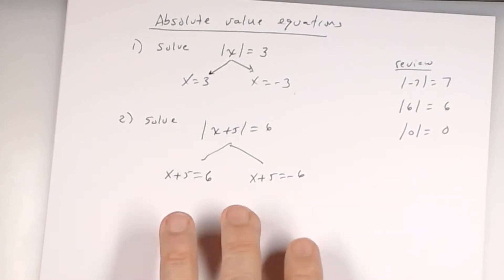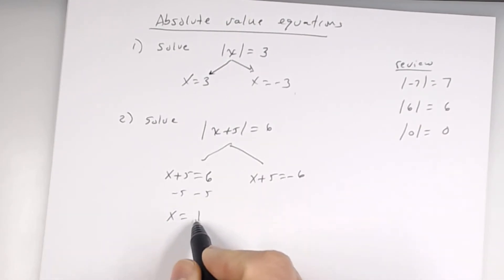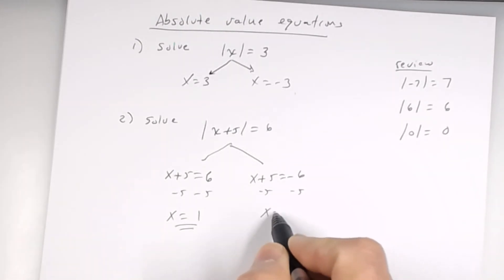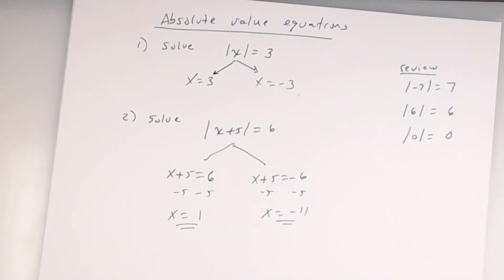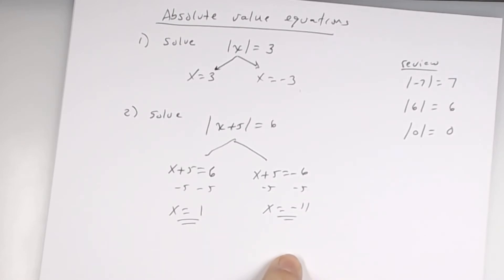Notice I went from this absolute value equation to two linear equations. For us, when we get to that point, it will be linear equations. Here I subtract 5 from both sides, so x equals 1. On the other equation, subtract 5 from both sides, so x equals negative 11. Unlike the radical equation, you don't have to check these — just like we never checked solutions to quadratic equations. The only solutions you have to check are those for radical equations.